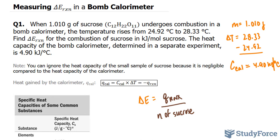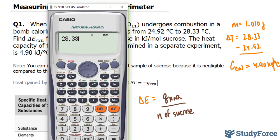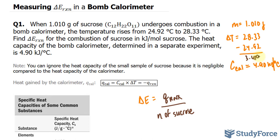We start by finding delta T, and I can use my calculator for that. 28.33 minus 24.92. This gives us 3.41, 3.41 degrees Celsius.